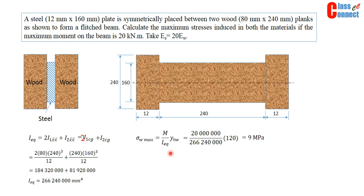So now we can substitute this in this equation and get the value of stress in wood section. That is the maximum value. We have substituted half of 240 that is 120. So the maximum stress in wood section is 9 MPa.